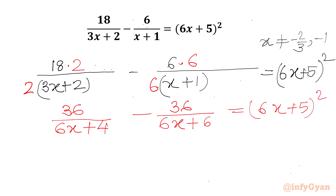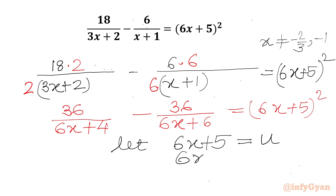Now we will consider a substitution. Let the right-hand side bracket 6x + 5 equal to u. Then the value of 6x + 4 will be u minus 1, and 6x + 6 will be u plus 1.